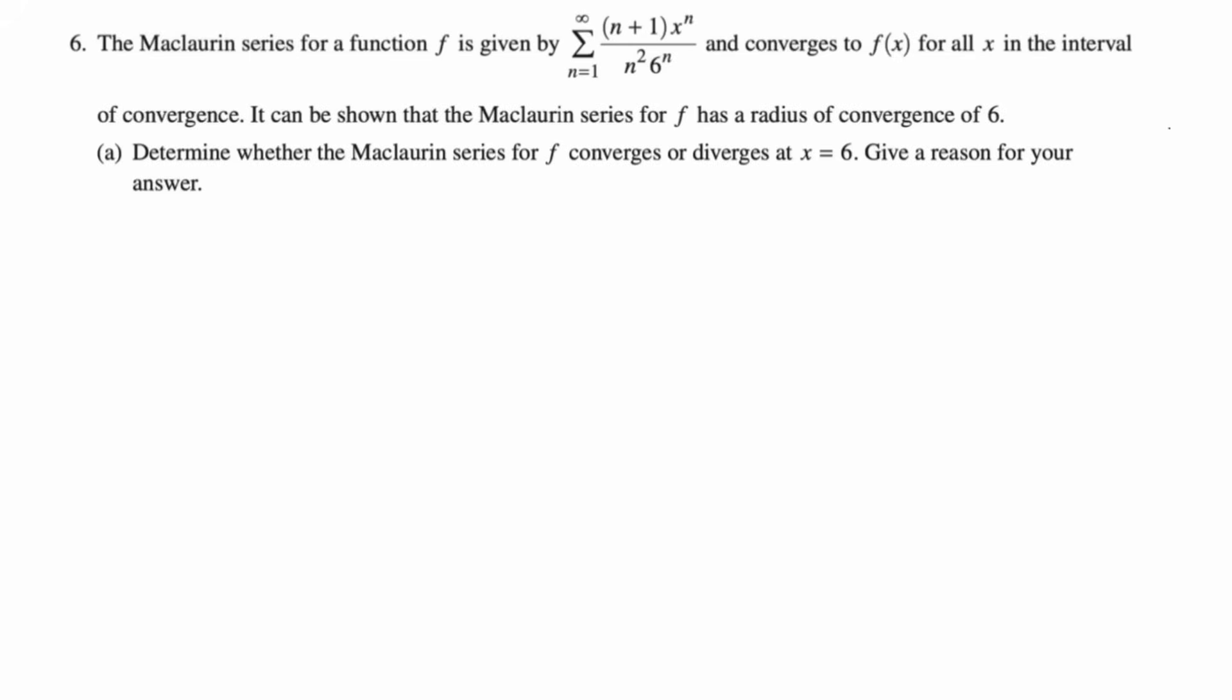It can be shown that the Maclaurin series for f has a radius of convergence of 6. Part (a): determine whether the Maclaurin series for f converges or diverges at x equals 6. Give a reason for your answer. So first thing I'm going to do is plug in 6. If you plug in 6, you get 6^n in the numerator, 6^n in the denominator, those cancel. You just end up with the sum of (n+1)/n^2.